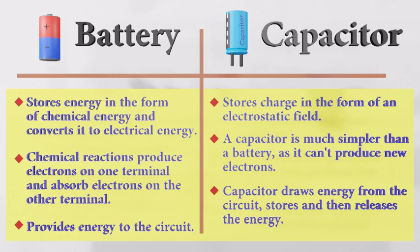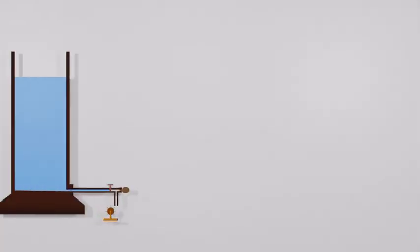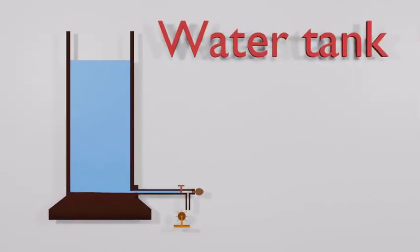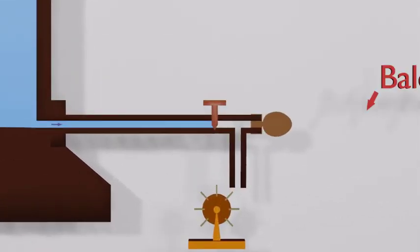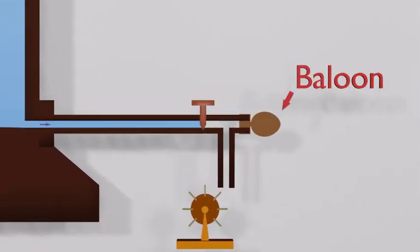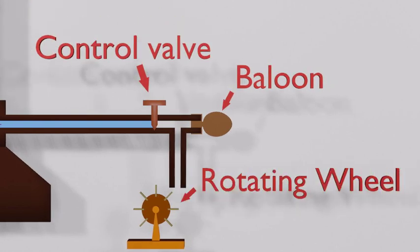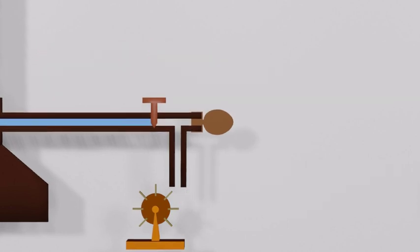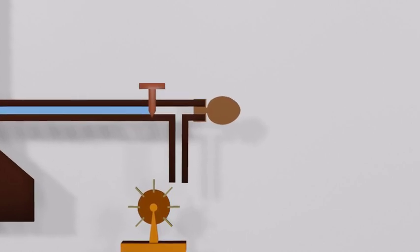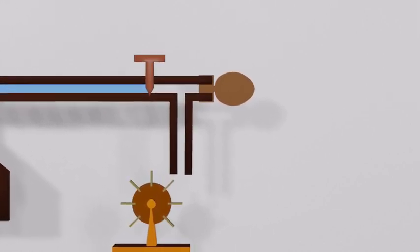To understand the capacitor, let's look at an example. This is a water tank connected to a pipeline. One end of this pipeline is connected to a rubber balloon, and there is a control valve to control the water flow. To convert the energy of moving water to work, we use a rotating wheel. A capacitor is like a rubber balloon connected to a water line like this.